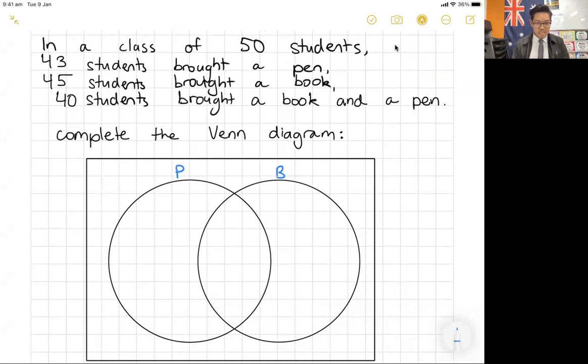It says 43 students brought a pen, 45 students brought a book, 40 students brought a book and a pen. Let me give you a hint: every time we do a question like this, you always want to start with the one where you've got 'and.' If you're looking for that 'and,' where two things happen, that's where you want to start. We know that 40 students brought a book and a pen, so that means I have to have 40 people that brought both. That means 40 is going to be the number that I put in between my two circles.